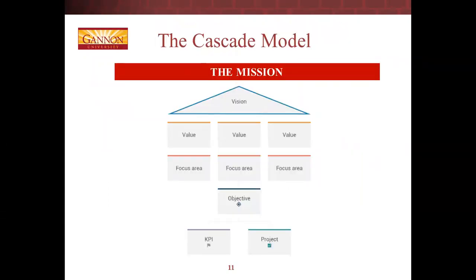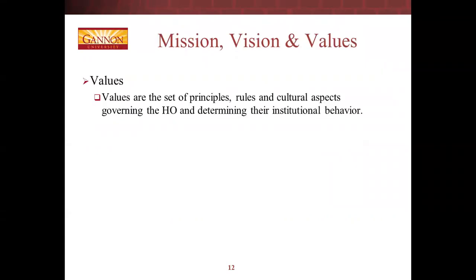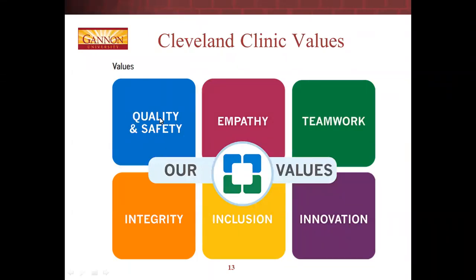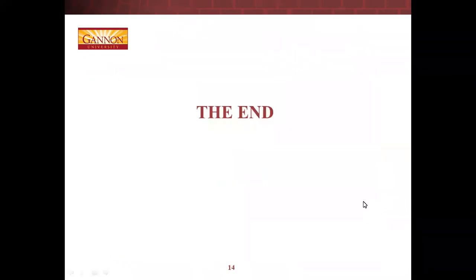Values are the set of principles, rules, and cultural aspects governing the healthcare organization and determining its institutional behavior. Values are core beliefs that everyone in the organization shares — what's important to the organization and how they should act or carry themselves. It's the ethical code that gives the healthcare organization its soul and character. Values need to be shared and widely disseminated. The Cleveland Clinic's values are: quality and safety, empathy, teamwork, integrity, inclusion, and innovation. This concludes the overview of the cascade model and the importance of mission, vision, and values.